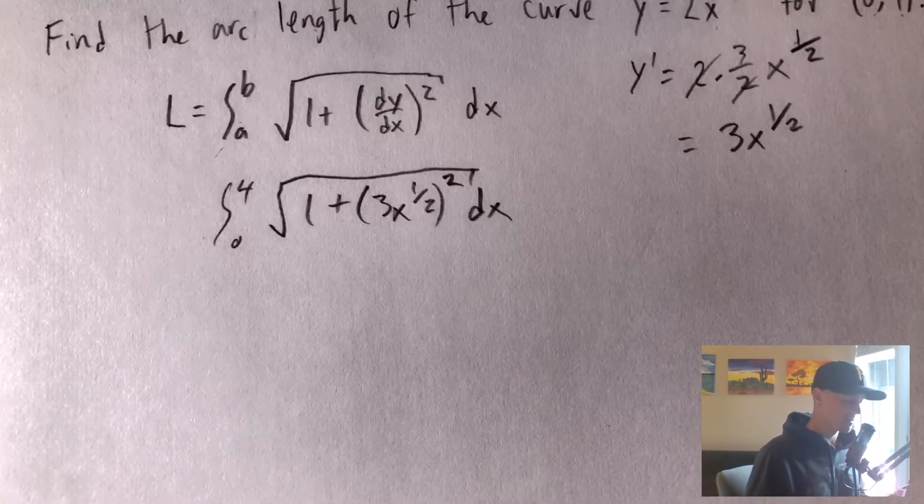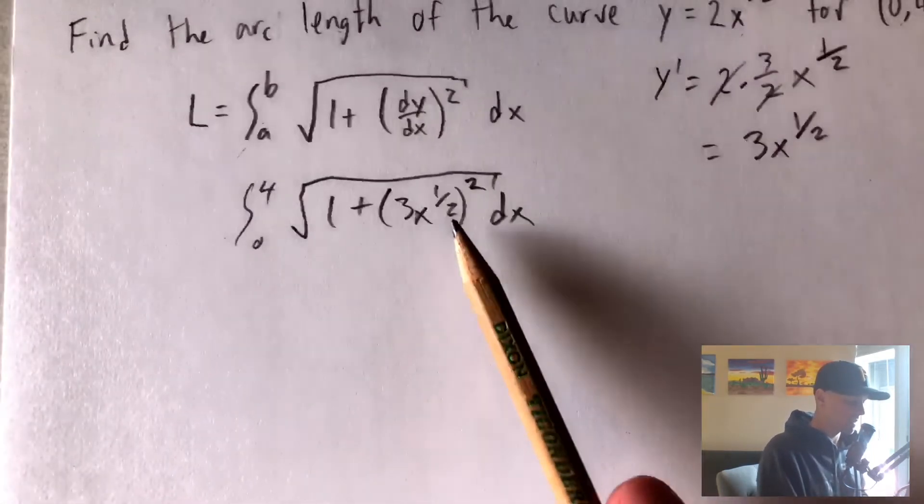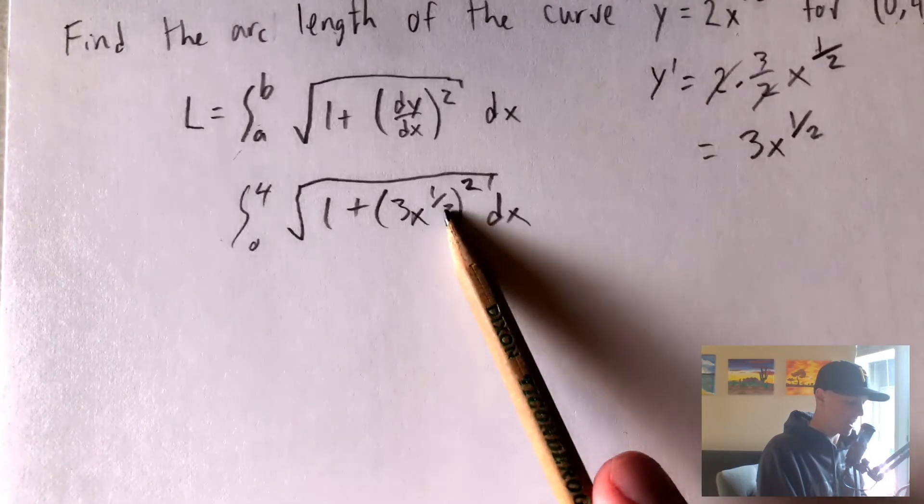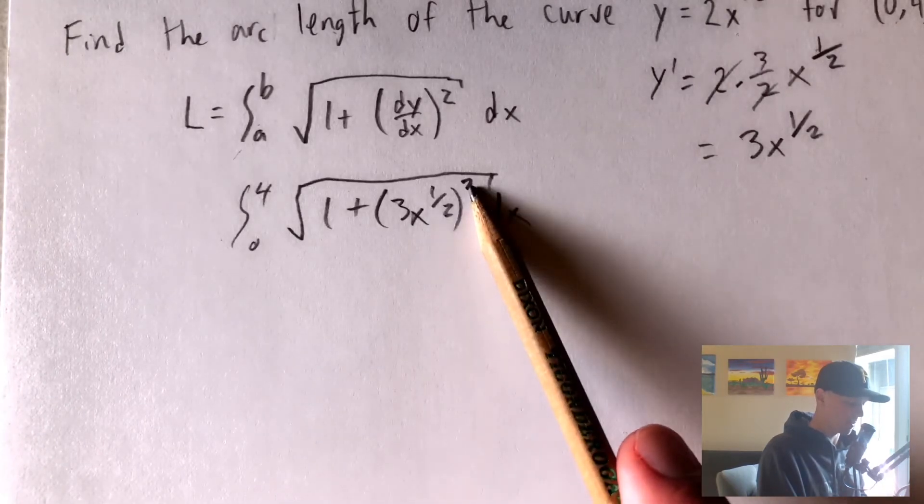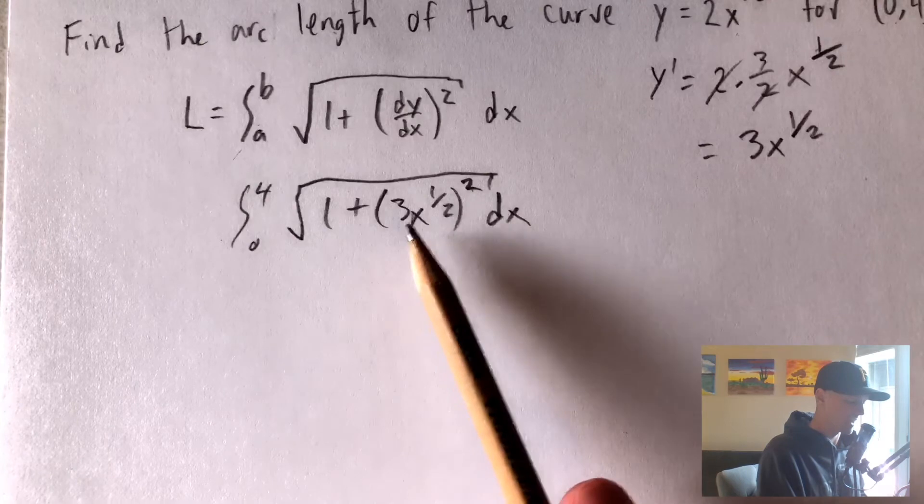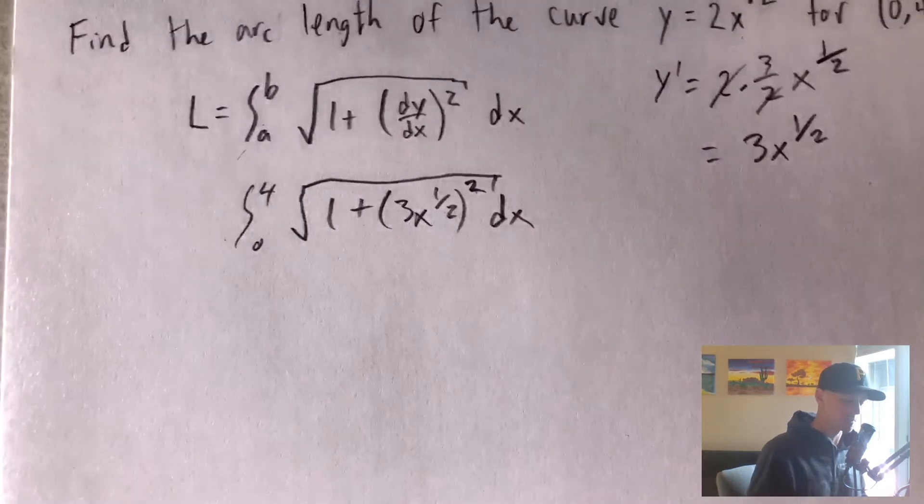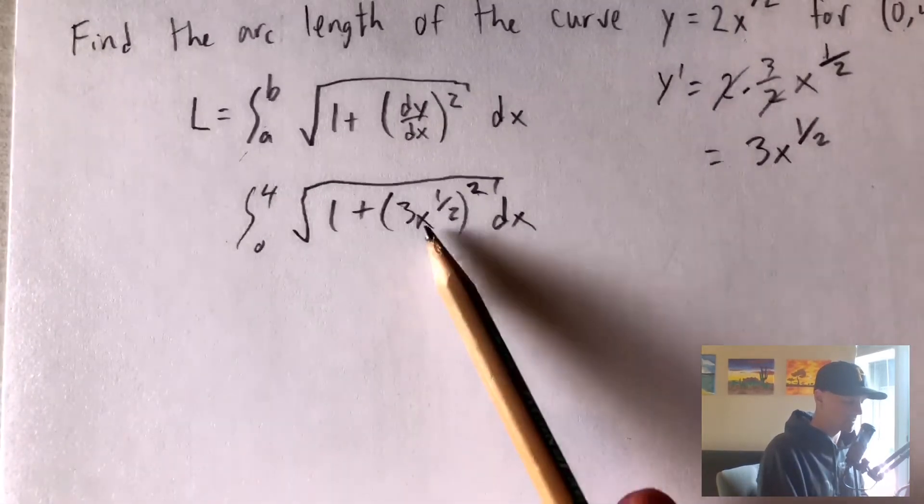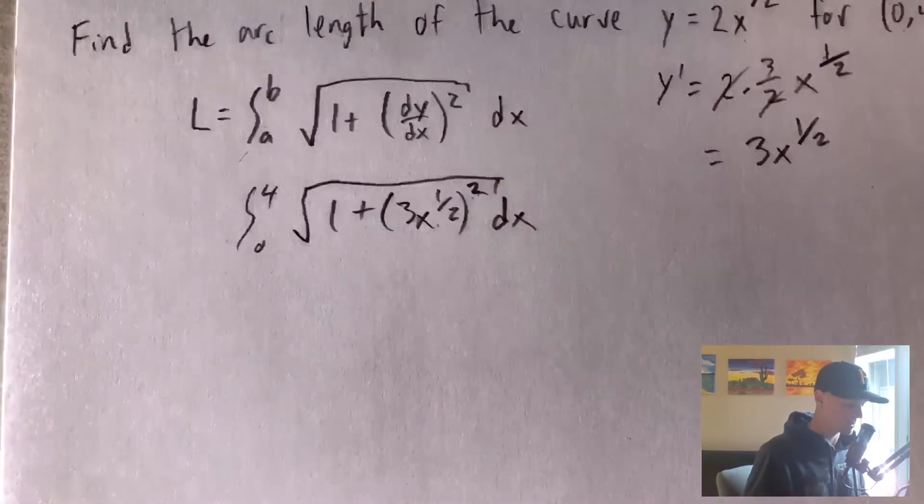So in this case, we're kind of lucky because having x to the 1 half and then up to the second power, those powers are basically just going to cancel out because x to the 1 half is the same as the square root of x. So we just have the square root of x squared, which is just x.